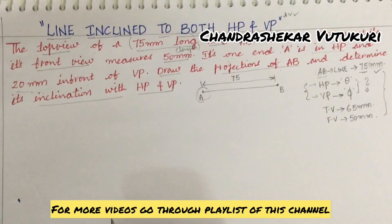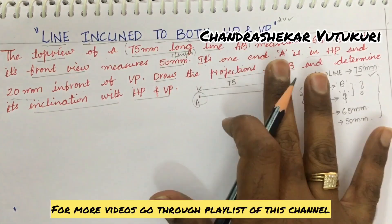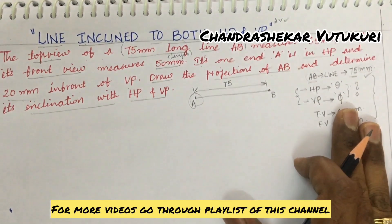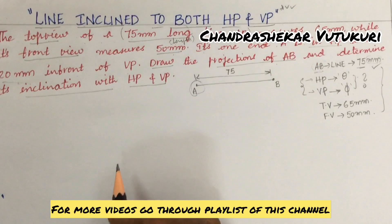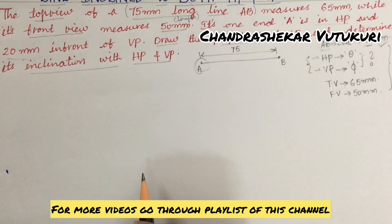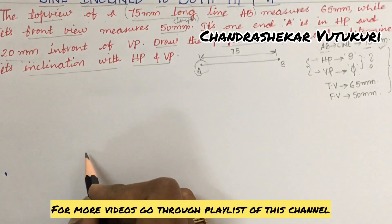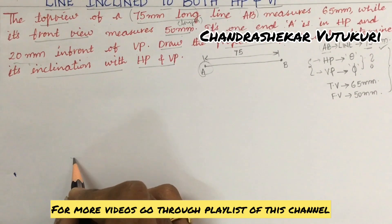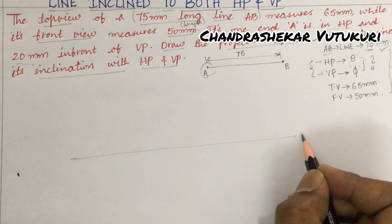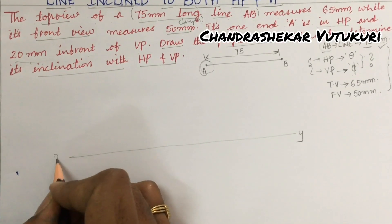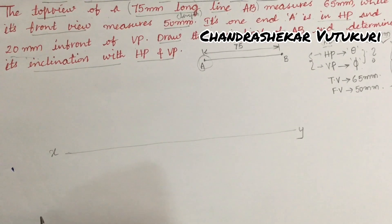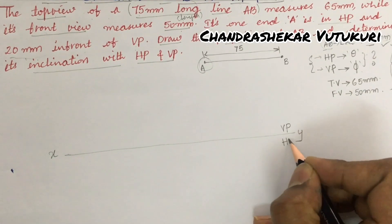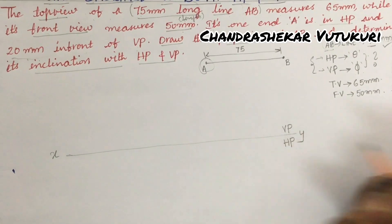Let us look into the problem and how to work it out. When a line inclined to both the planes concept is given, please understand the question like this: underline the terms and make sure of writing the data, then proceed with the answer. Before going to work, try to make a rough sketch. I am not working with instruments here — I am just showing you the rough sketch. The first and foremost thing you need to draw is the XY line, the reference line. Above XY is the vertical plane and below XY is the horizontal plane.